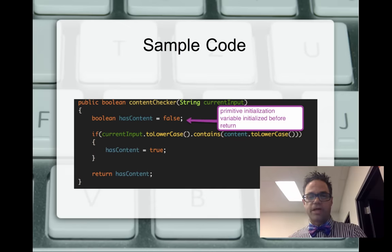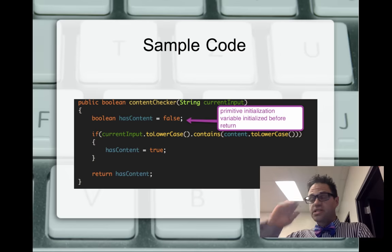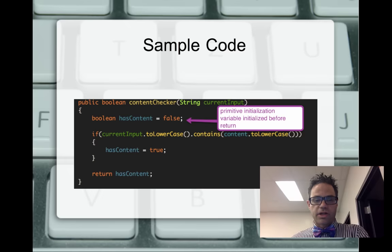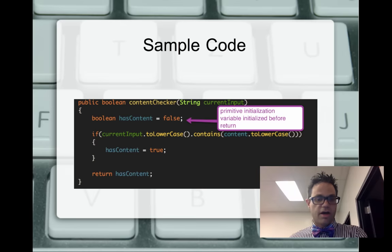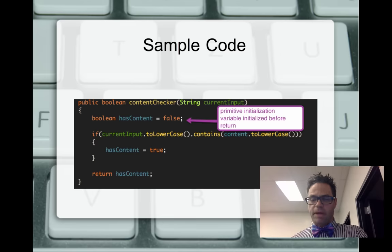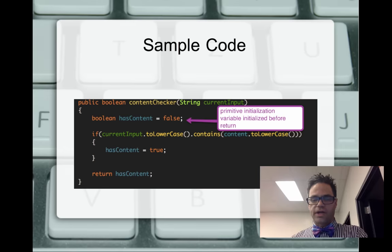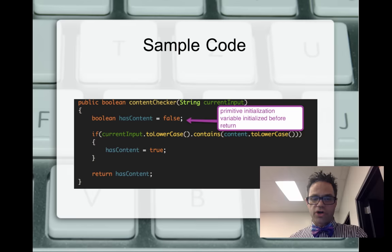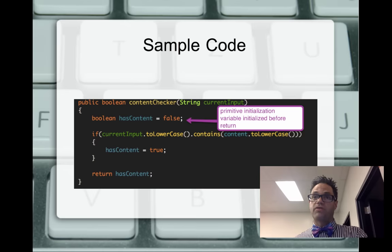Here's another sample — a boolean method. The first thing we do is declare a boolean variable with an appropriate default value, in this case false. Then we do the associated test: currentInput.toLowerCase().contains(content.toLowerCase()). If it matches, we assign it to true and return that variable. By initializing the value at the beginning and returning it at the end, we guarantee proper execution regardless of what happens inside the if test.